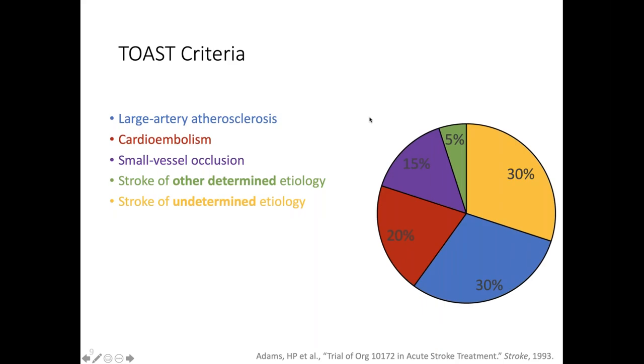There's this trial from the 90s called the TOAST trial, which is actually a horrible name for a stroke trial. It was a trial of a heparinoid product for acute management of stroke. The medication didn't work - it was a negative trial. But that trial was from the 90s, and that was really the first time anybody thought to differentiate the different types of stroke by etiology. If you think about what causes one stroke versus another, they're totally different beasts.